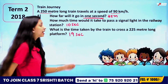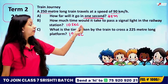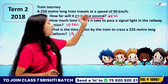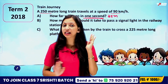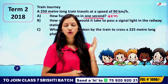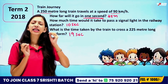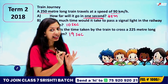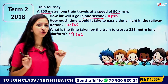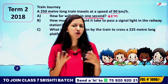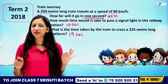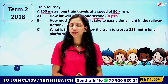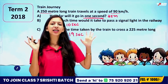The time is 19 seconds. To summarize: to pass a signal light, we use the train length — 10 seconds. To pass the platform, we use train length plus platform length. We convert the unit, and the problem becomes easy. Unit conversion makes scoring full marks in the exam easy.